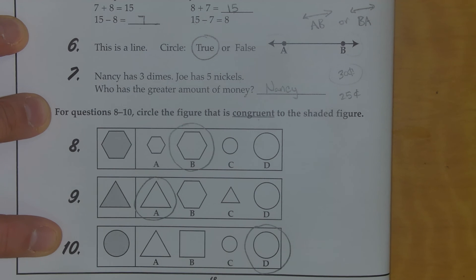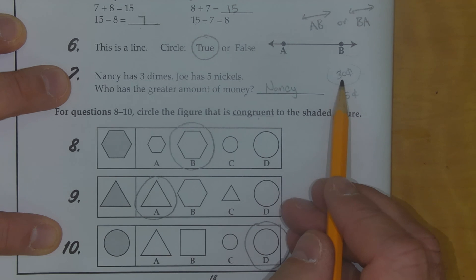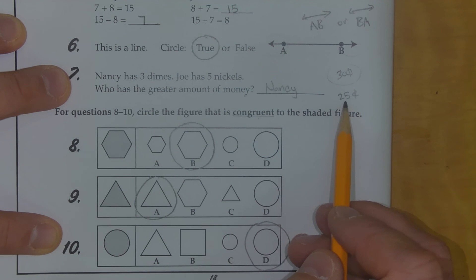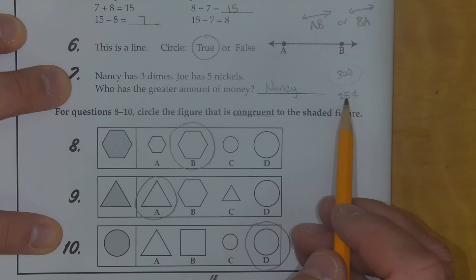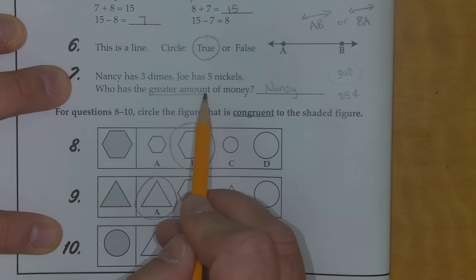Now that I'm finished, I'm just going to double check. Number 7 should be Nancy, because 3 dimes is 30 cents. Joe has 5 nickels, that's 25 cents. And I know that 30 cents is more than 25, so Nancy has the greater amount of money.